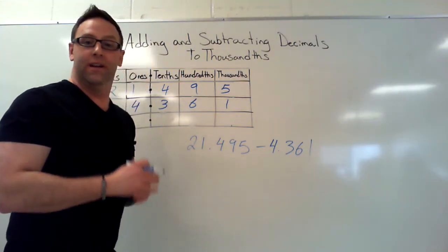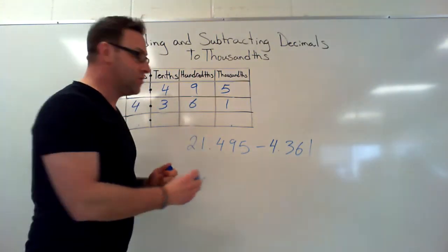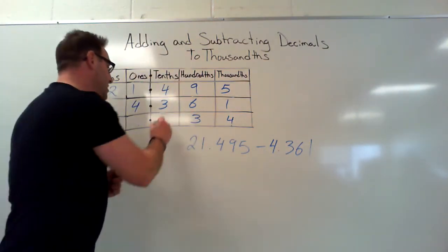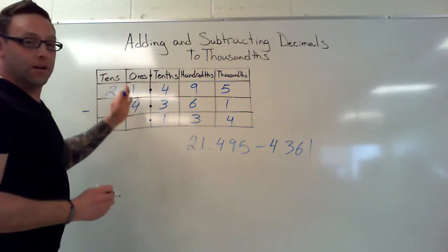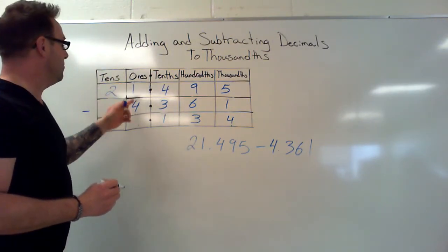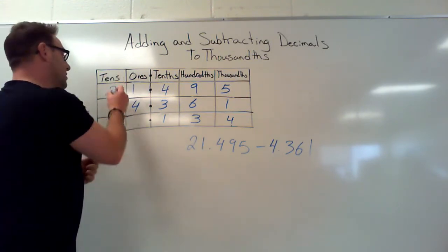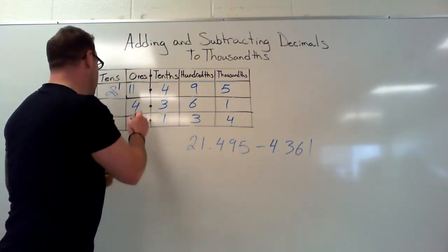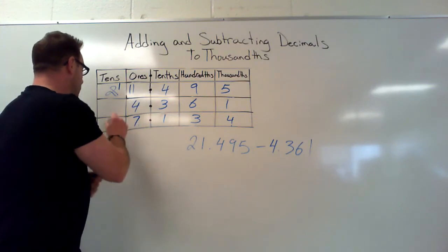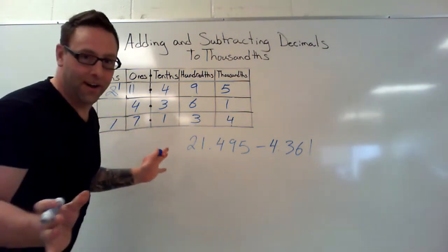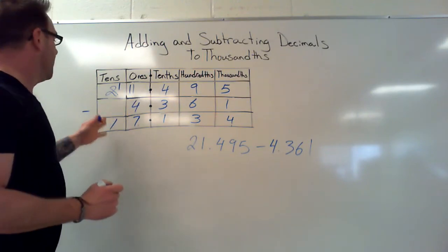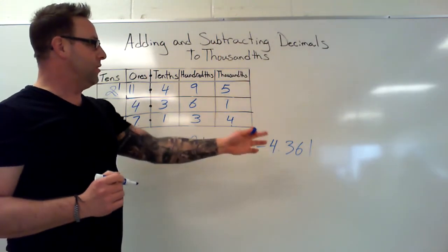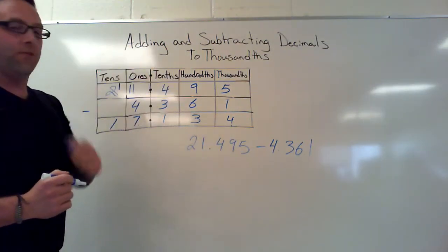I'll put my minus sign here and subtract as we would any two numbers. Five minus one is four, nine minus six is three, four minus three is one. Now we can't subtract four from one, so just like regular subtraction we borrow from the two — now we've got eleven minus four is seven, and two minus zero is one. The answer: twenty-one point four nine five minus four point three six one is seventeen point one three four.